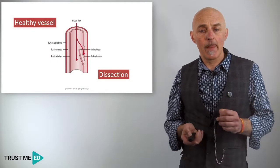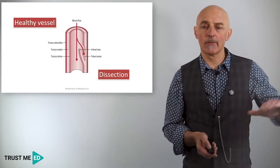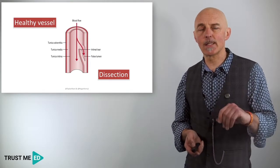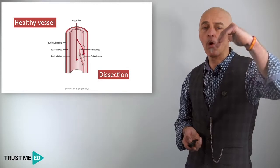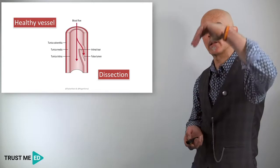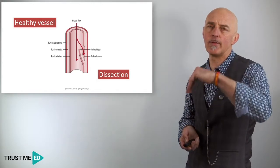We hear a lot about dissection. Dissection sounds like the vessel's been cut, but that's not really the story. In actual fact, what it means is that the vessel's been affected on the inside, on the endothelium, and the blood starts to channel down between the layers of the vessel.